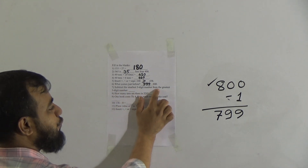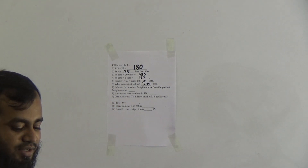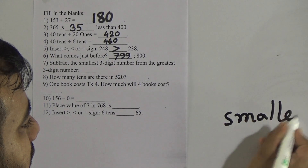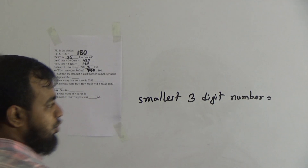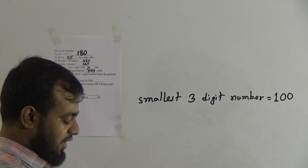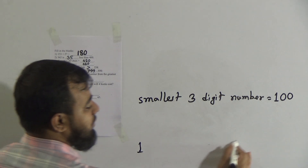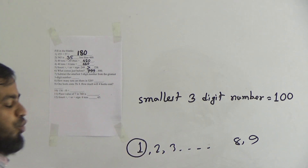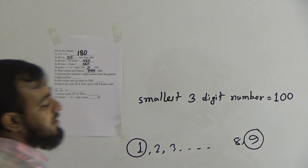Question number 7: subtract the smallest 3-digit number from the greatest 3-digit number. We need to know both. The smallest 3-digit number is 100. Let's build the concept: digits go from 1 to 9. The smallest 1-digit number is 1 and the biggest is 9.